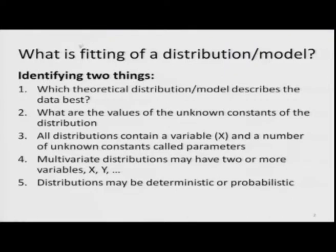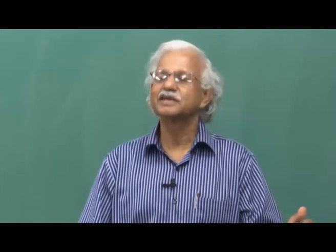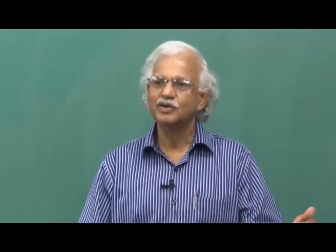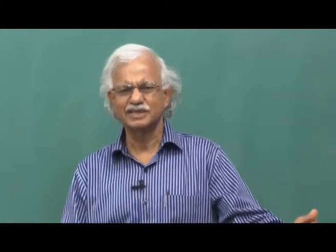The first thing is to define what is fitting of a distribution or model. This involves identifying which theoretical distribution model describes the data best, and determining the values of the unknown constants of the distribution. These two things are most important in fitting a distribution — first identifying whether it is a negative exponential, binomial, Poisson, normal, or one of hundreds of other distributions.